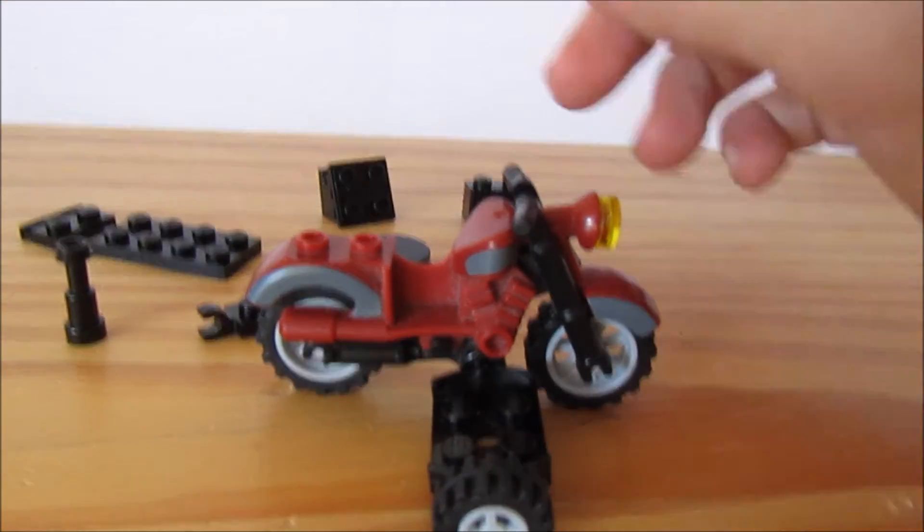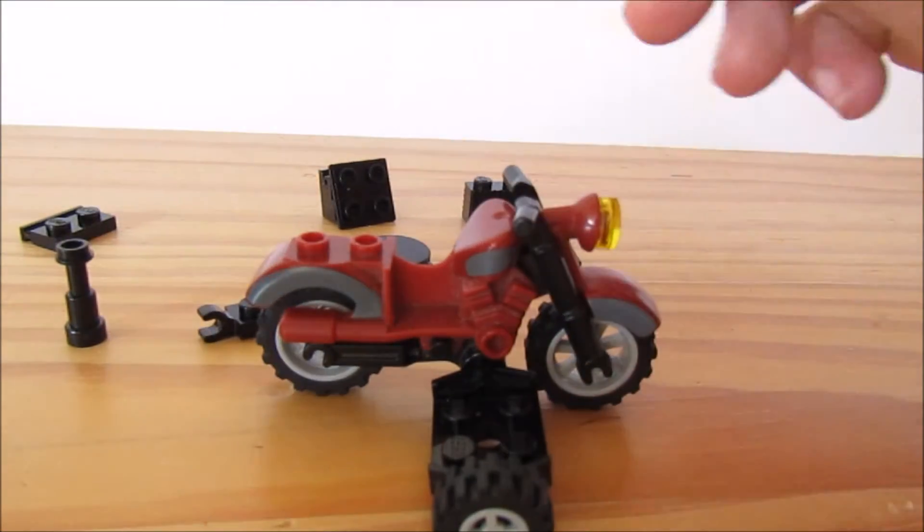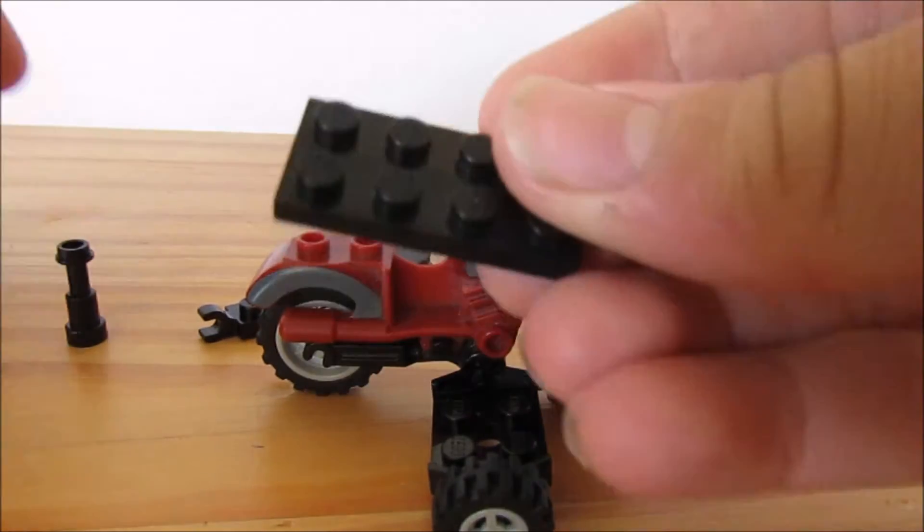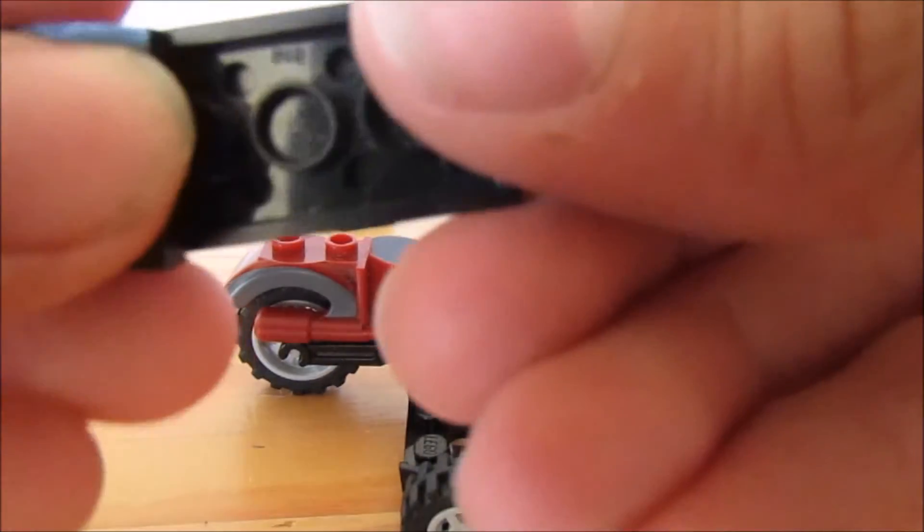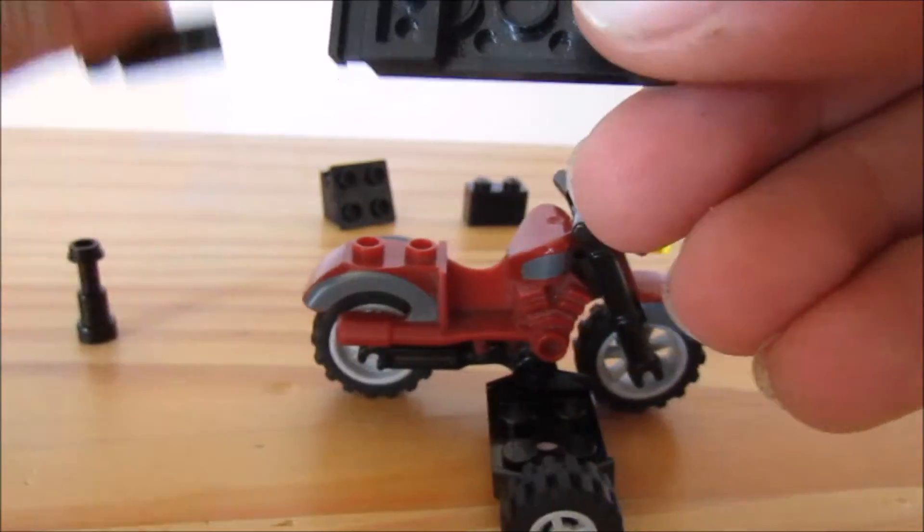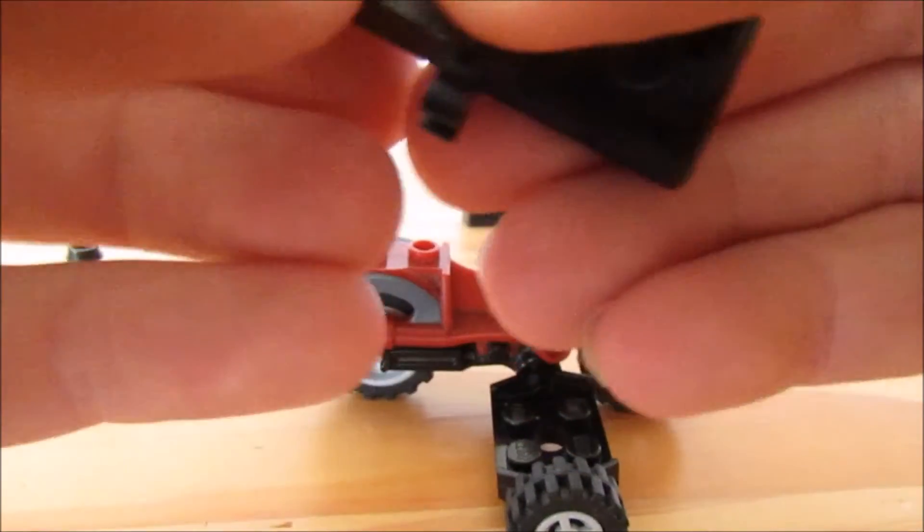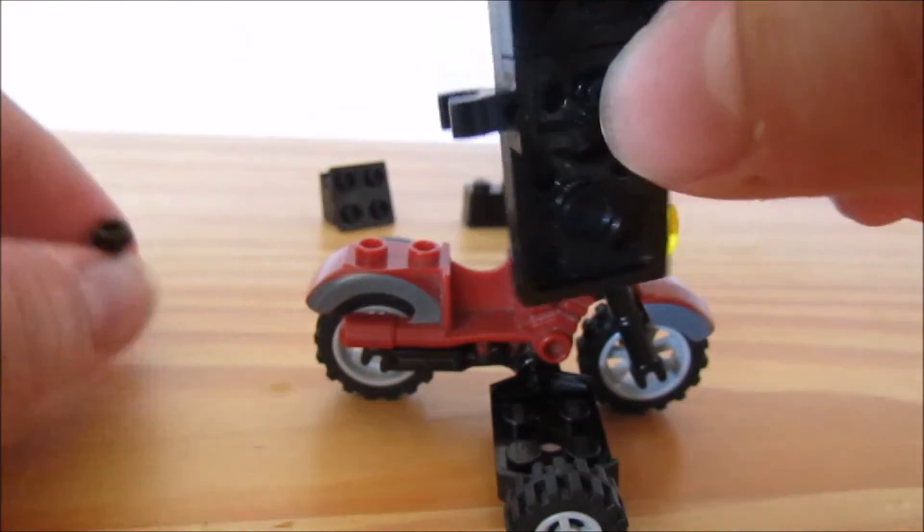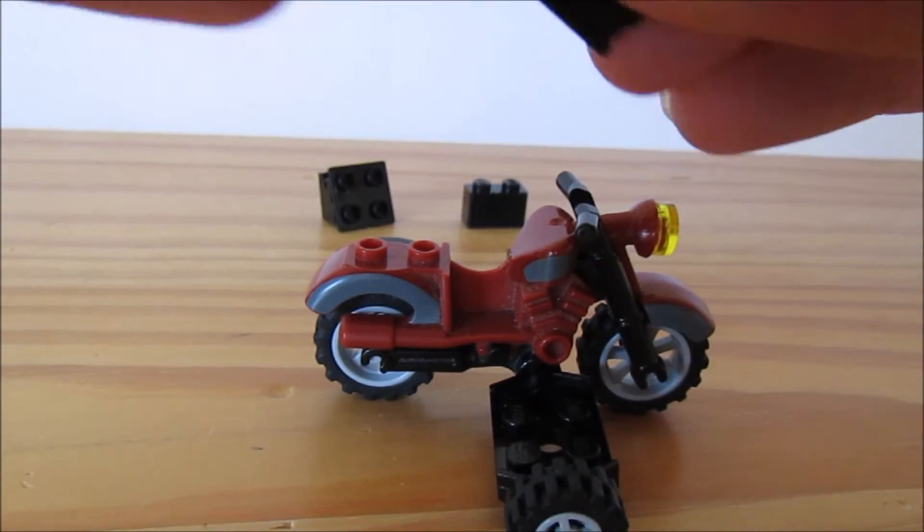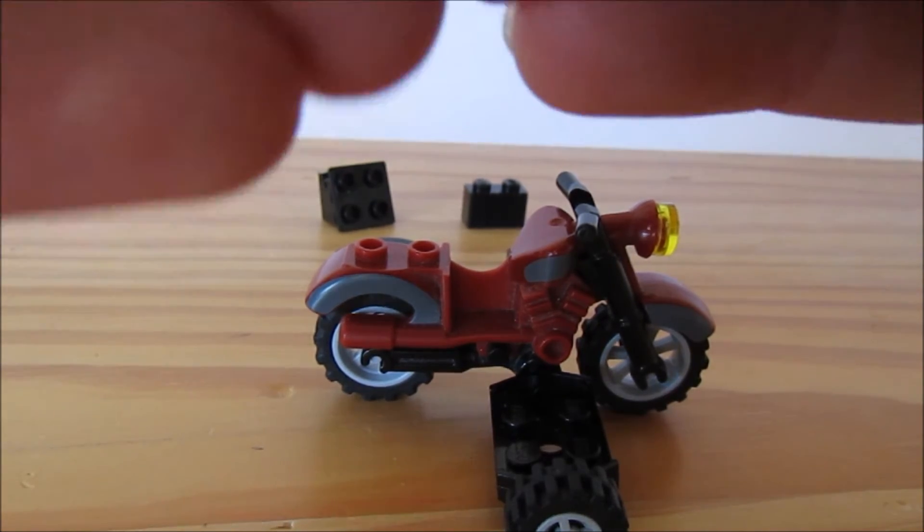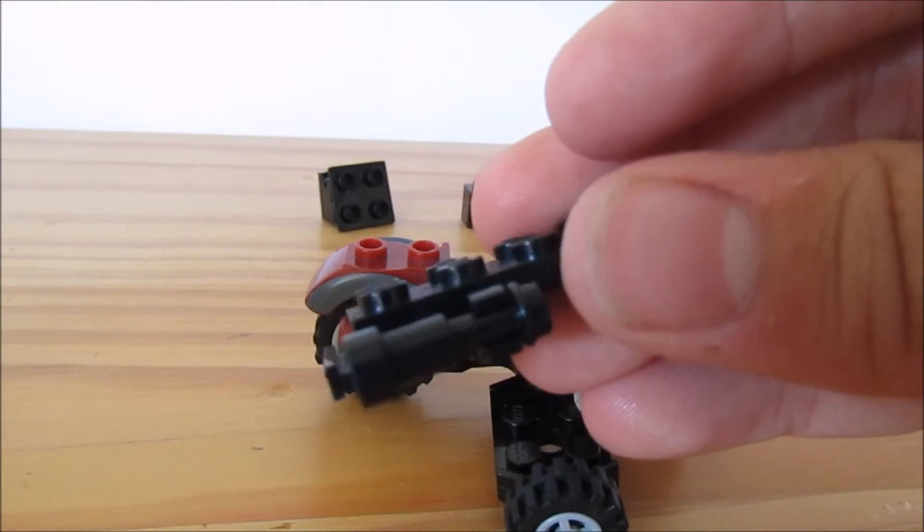Now what you're going to do is attach your four by two, but before you do that, put this underneath. Then get this piece with the hinge, and with this hinge on, you're going to put your exhaust on like so, and then attach that onto your sidecar.